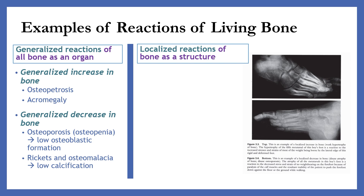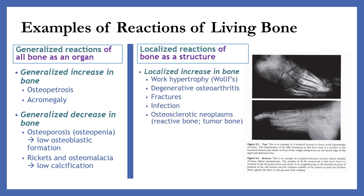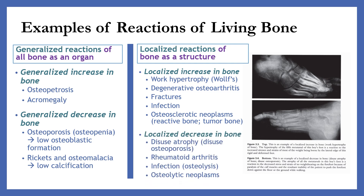The other type is localized reactions of bone as a structure. The localized increase in bone includes Wolff's law hypertrophy, Paget's disease, degenerative osteoarthritis, fractures, infections, osteosclerotic neoplasm, or reactive bone or tumor bone. The localized decrease in bone includes disuse atrophy or disuse osteoporosis, rheumatoid arthritis, infections, osteolysis, and osteolytic neoplasms.